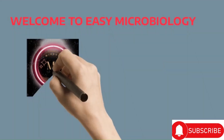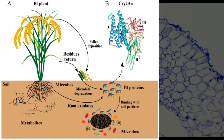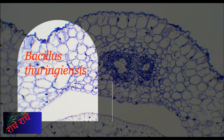Welcome to Easy Microbiology. Good morning everyone. Today we will be discussing Bacillus thuringiensis, an important bacterium that is highly beneficial to agriculture. We will explore its habitat, morphological features, biochemical characteristics, host range, virulence factors, mechanisms of antibiotic resistance, and more. Let's take a closer look and begin.